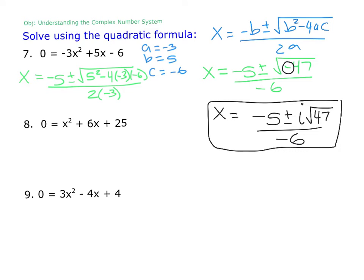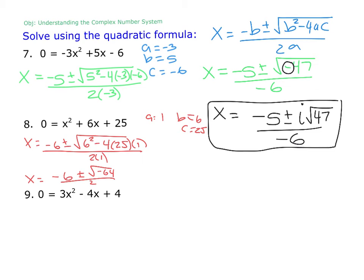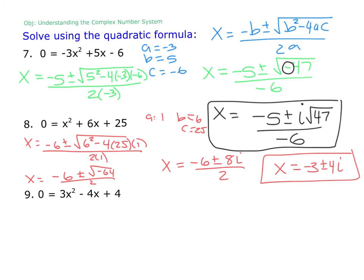Now pause the video and try number 8 and number 9 on your own. So we got a is 1, b is 6, and c is 25. -6 ± √(36 - 100) all over 2. 36 minus 100 is -64. So then we have x equals -6 ± all over 2. What's the square root of 64? 8. Since we have a negative under the square root, that's i. Then we can simplify that. So x equals -3 ± 4i, and that's our final answer.